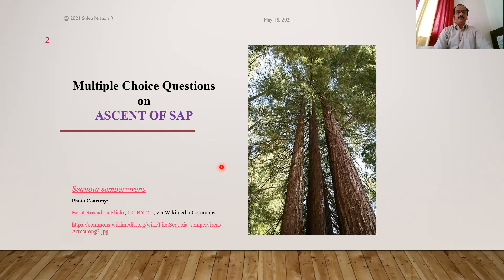You can see here this beautiful tree named Sequoia sempervirens. Sequoia sempervirens is the species. The specialty of this plant is that it is the tallest tree of the world, having a height of 115.5 meters, equivalent to 380 feet.